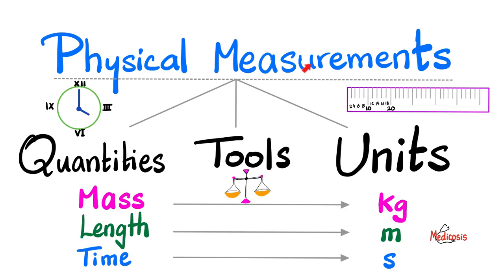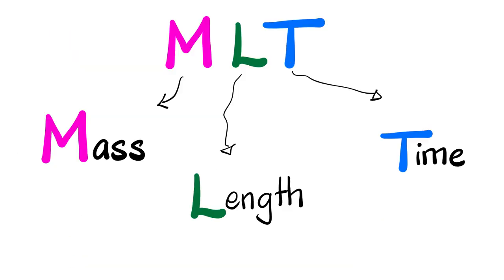Physical measurements include physical quantities like mass, length and time, the tools that we use to measure those quantities, and the measuring units. For example, mass is measured in kilograms, length is measured in meters, and time is measured in seconds. And this is what we mean by MLT — mass, length, time.